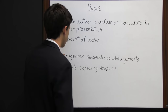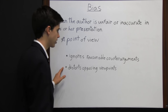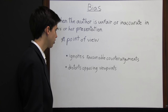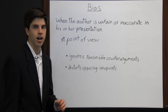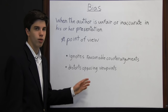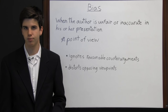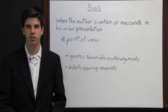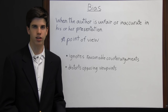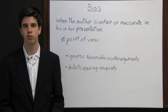A bias is when someone ignores reasonable counter-arguments or distorts opposing viewpoints. As a reader, be aware when an author is being biased — look for clues like when they only talk about their own arguments and don't address opposing ideas, or when they share an opposing viewpoint but don't share it accurately. Once you're tipped off that a writer is being biased, you'll know that other opinions they present may also be biased.